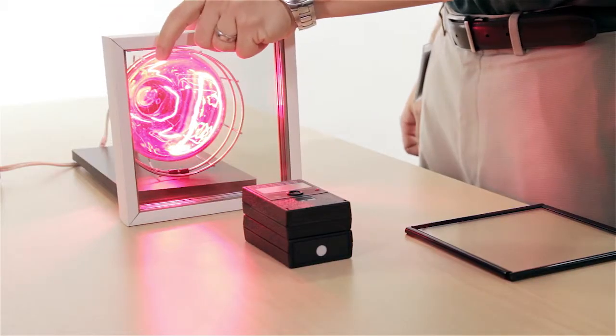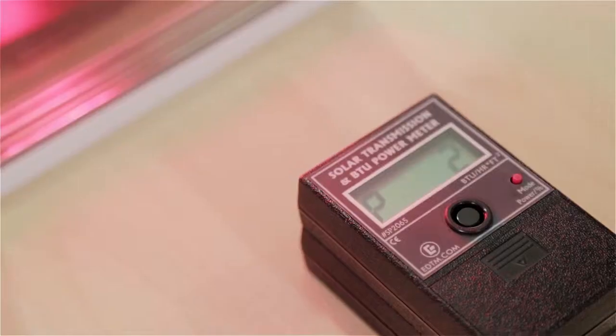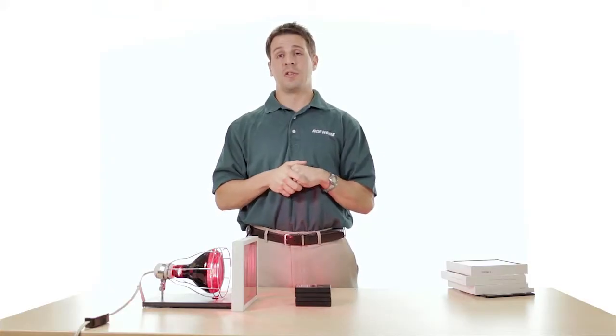Three panes of glass, the low E coating and the argon, the meter reads two. Two percent of the heat from the lamp is actually coming through and 98% is being blocked away.